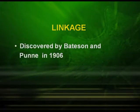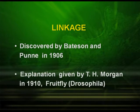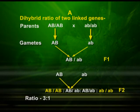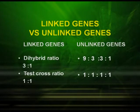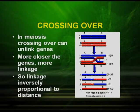Now let us see another very important phenomenon — linkage — which was discovered by Bateson and Punnet in 1906. The explanation was given by D. H. Morgan in 1910 based on his studies on Drosophila. Let us explain the dihybrid ratio of two linked genes and observe the result. The ratio observed is 3:1, which is quite different from the usual dihybrid ratio of 9:3:3:1. The parents were homozygous dominant (AABB) crossed with homozygous recessive (aabb), and the offspring showed a ratio of 3:1 instead of 9:3:3:1.